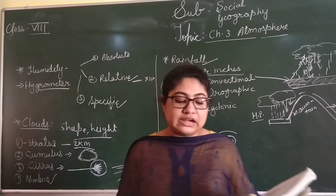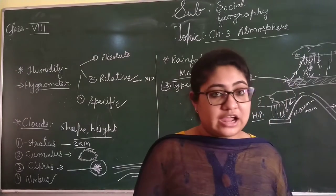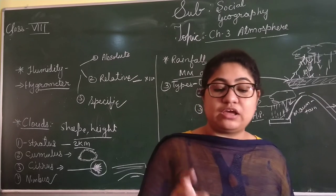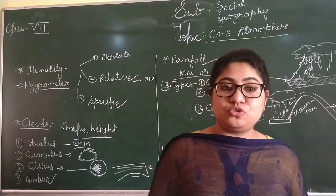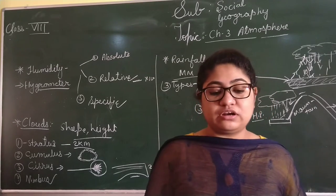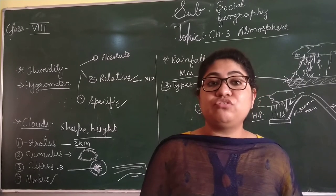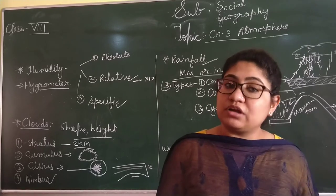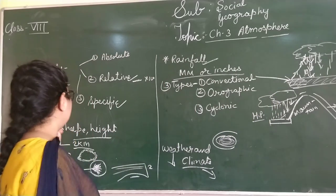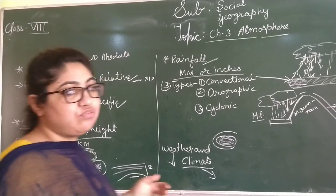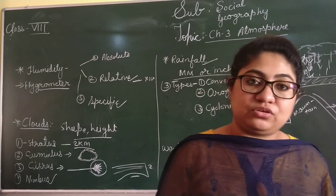Now, factors affecting the climate of a place: latitude, altitude, winds, distance from the sea, distribution of land and water bodies, ocean currents, etc. — all these things influence the weather and climate conditions. So children, in this video we have learned about humidity, clouds, rainfall, weather and climate conditions. Thank you.